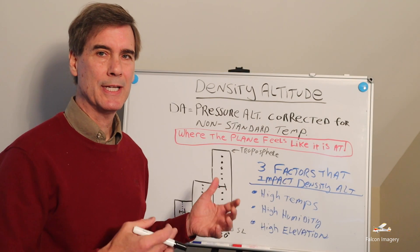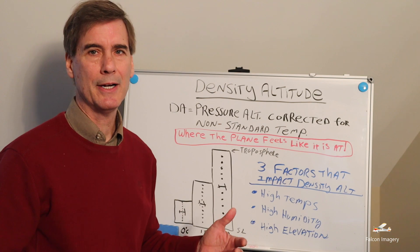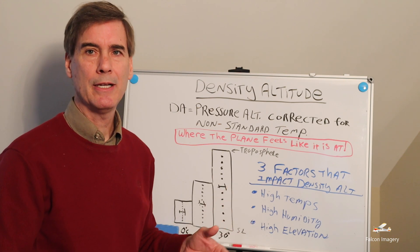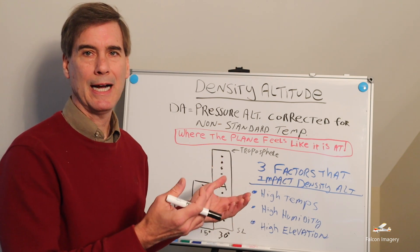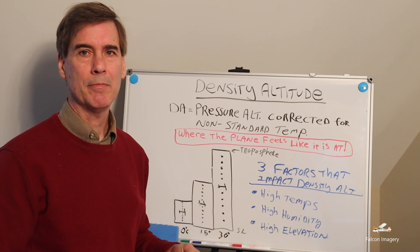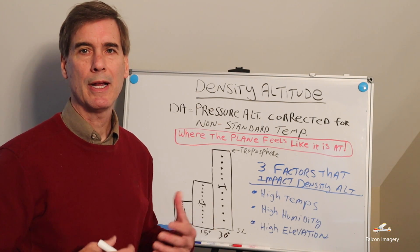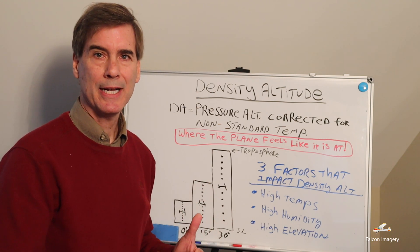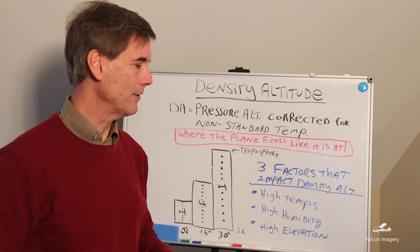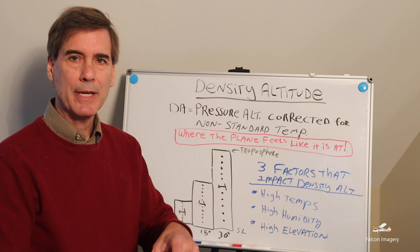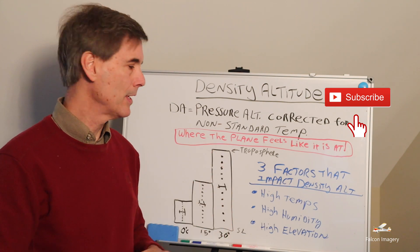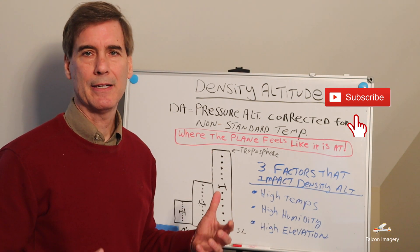There are three factors that influence density altitude. The first is higher temps — with higher temps, air molecules are further apart, giving you lower density or effectively higher density altitude. The second factor is high humidity — more moisture in the air means less room for air molecules, so you get less air density and higher density altitude. The last factor is high elevation — the higher you go in the atmosphere, air molecules are further apart due to gravity. So these three factors affect density altitude.